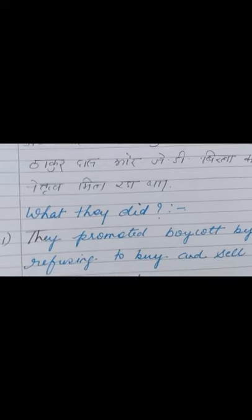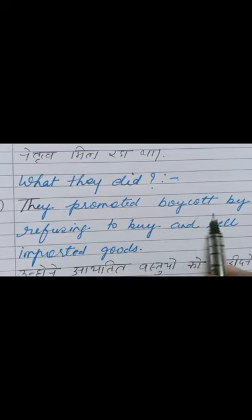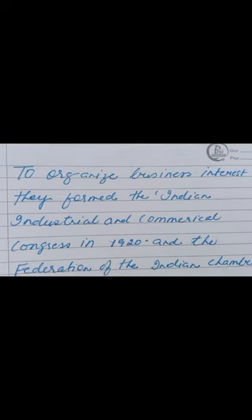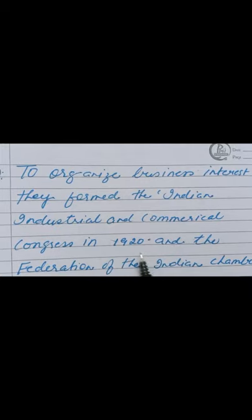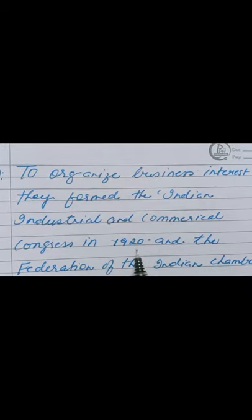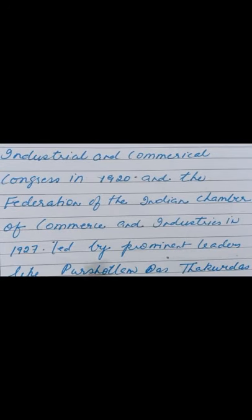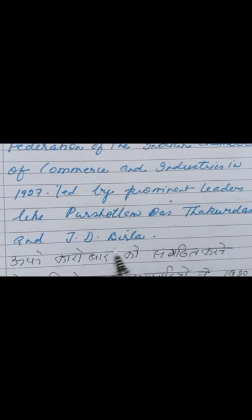They promoted the boycott by refusing to buy and sell imported goods. To organize business interests, they formed the Indian Industrial and Commercial Congress in 1920, and the Federation of the Indian Chamber of Commerce and Industries in 1927, led by prominent leaders like Purushottam Das Thakurdas and J.D. Birla.